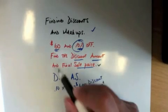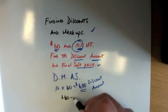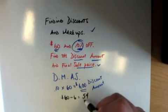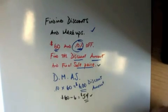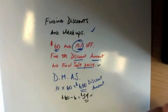Now what's the final sale price? Well, we're going to subtract. $60 minus $6 is going to give us $54. So the final sale price is $54, and of course you have taxes. That's how you would do that one.